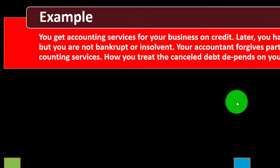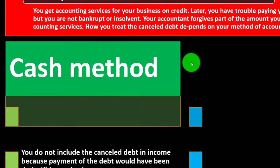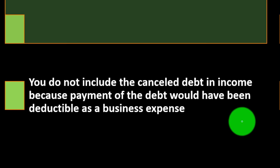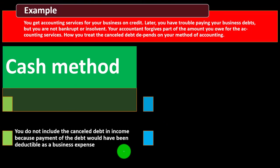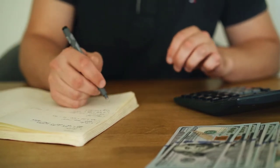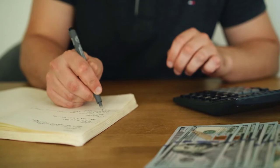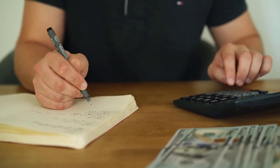Example: you get accounting services for your business on credit. Later you have trouble paying your business debts but you are not bankrupt or insolvent, and your accountant forgives part of the amount you owe. How you treat the canceled debt depends on the method of accounting. On the cash method, you do not include the canceled debt in income, because payments of the debt would have been deductible as a business expense — you never put the expense on the books since you hadn't paid the cash, so you never got the deduction.